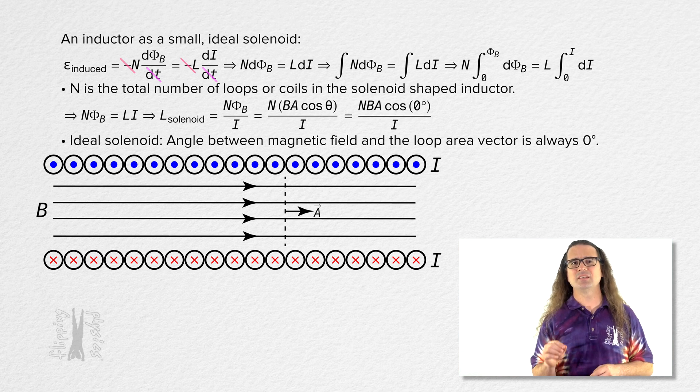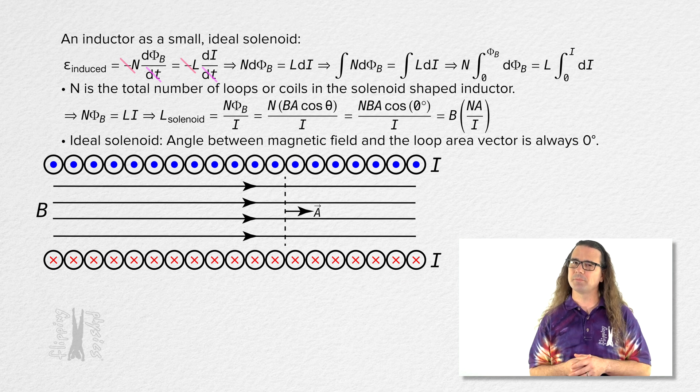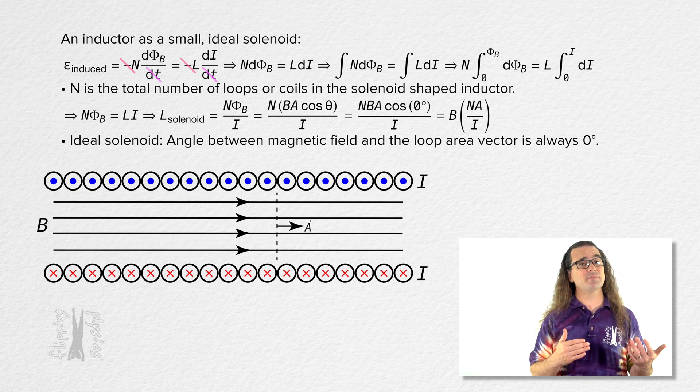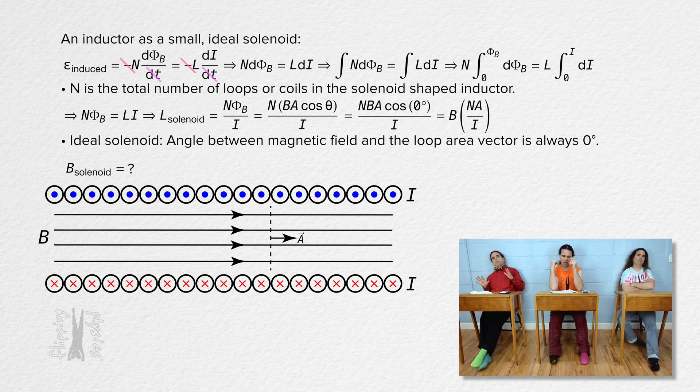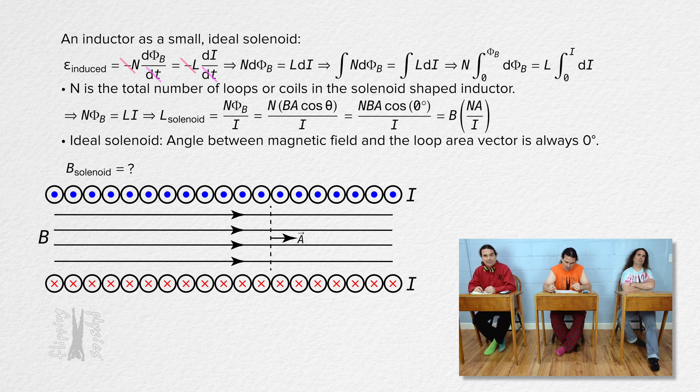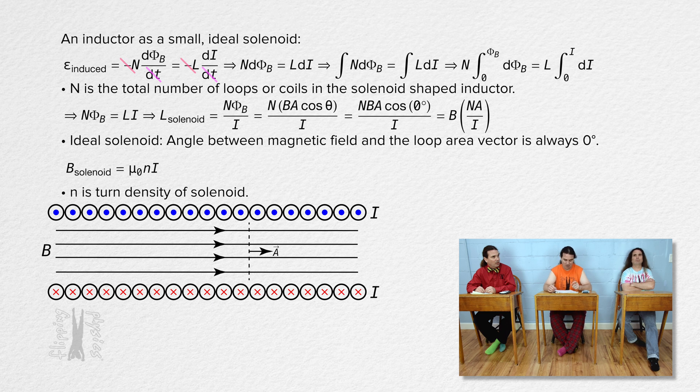We now have that the inductance of a solenoid equals the magnetic field times the quantity number of loops times cross-sectional area divided by current. Bobby, what is the equation we derived in a previous lesson for the magnetic field inside an ideal solenoid? The magnetic field inside an ideal solenoid equals the magnetic permeability of free space times the turn density times the current through the solenoid.